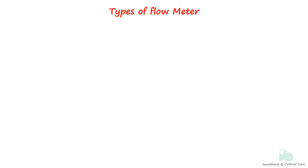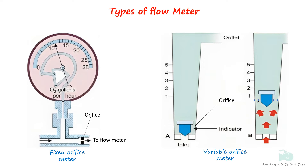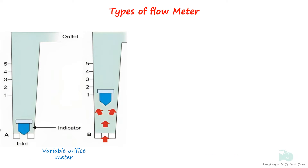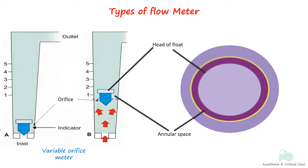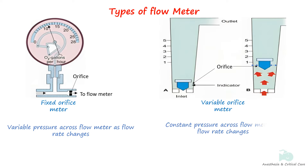There are two types of flow meters depending on the size and design of the orifice: variable orifice flow meters and fixed orifice flow meters. The orifice or annulus is the area between the outside of the bobbin and the inside of the tube. In fixed orifice flow meters, the pressure across the flow meter varies as the flow rate changes, whilst the pressure is constant in variable orifice flow meters.